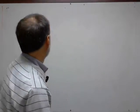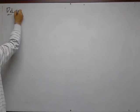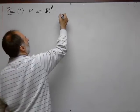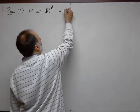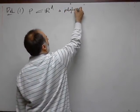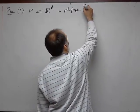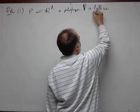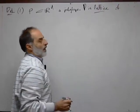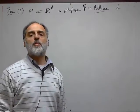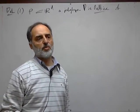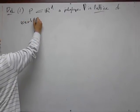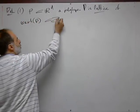Here is the definition. Part one: a polytope is called lattice if it is the convex hull of lattice points, which is the same as the vertices of P are lattice points, or the vertex set of P is a subset of Z to the power d.